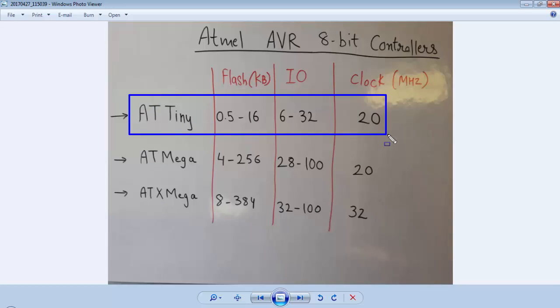The first category under AVR microcontroller is ATTINY microcontrollers. These microcontrollers are available with 0.5K to 16KB of flash memory with minimum of 6 and maximum of 32 input-output pins and maximum clock frequency for ATTINY is 20 MHz.